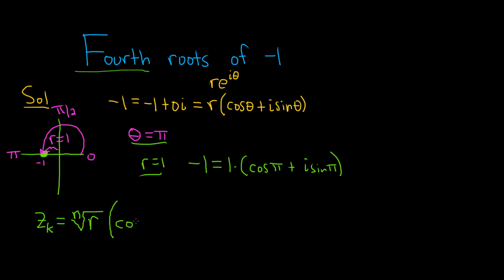Parentheses cosine of theta over n plus 2k pi over n, plus i sine theta over n plus 2k pi over n. Where k here runs from 0 to n minus 1.